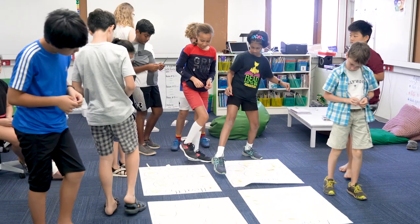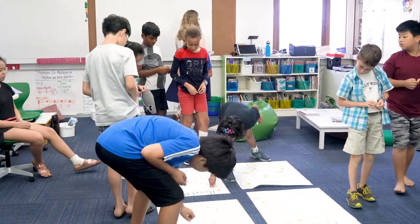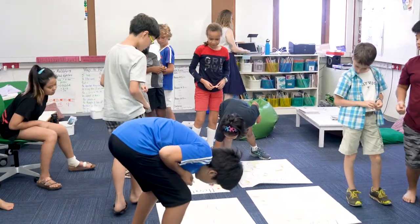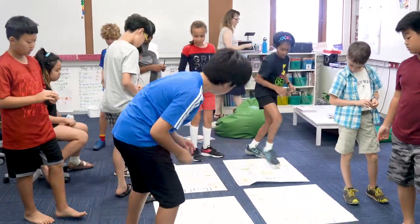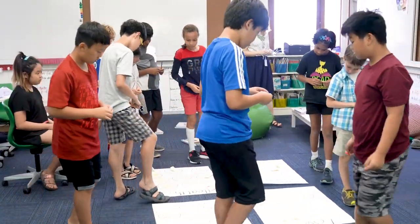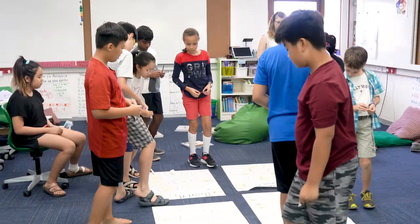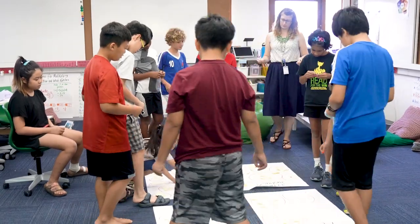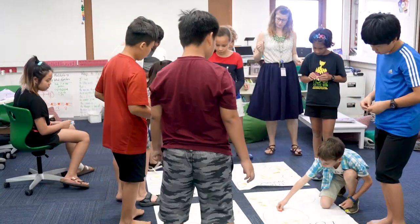We started off voting, putting post-it notes on what we want to do. We had four categories: security, love, justice, family, and one other. We decided that our most important things are family, love, health, and security.